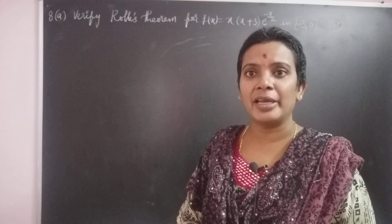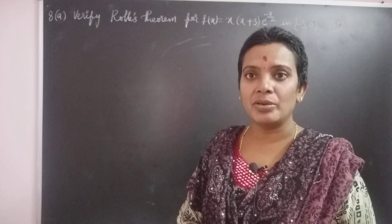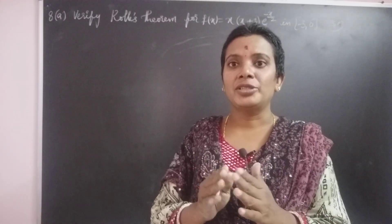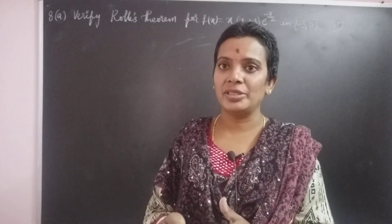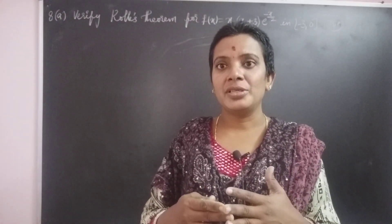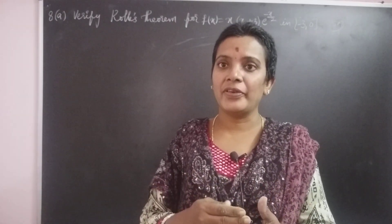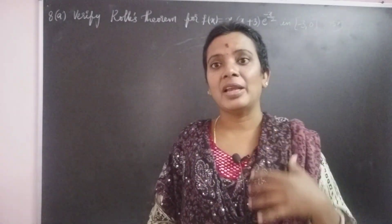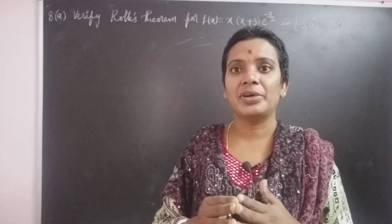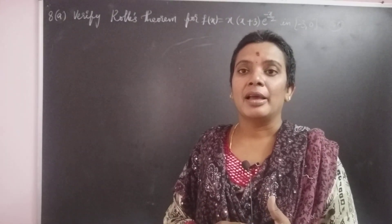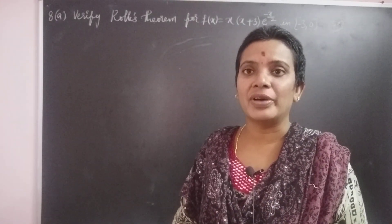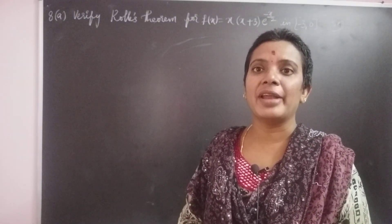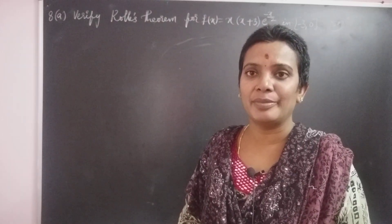First we have an idea about Rolle's theorem statement. What is Rolle's theorem statement? The first condition is the function is a continuous function in the given closed interval, derivable in the open interval, and F(A) equal to F(B), meaning the end functional values are equal. If these three conditions are satisfied for any function, then by Rolle's theorem there exists at least one point C belonging to the open interval (A, B) such that F'(C) is equal to 0.